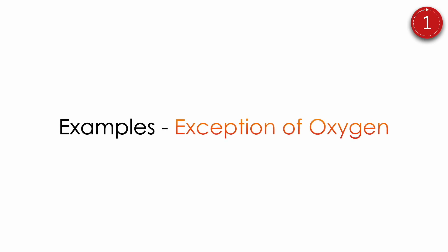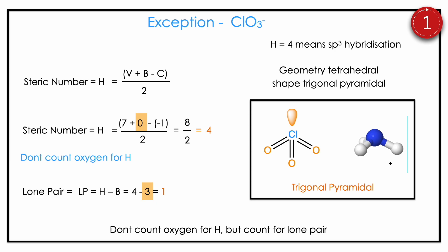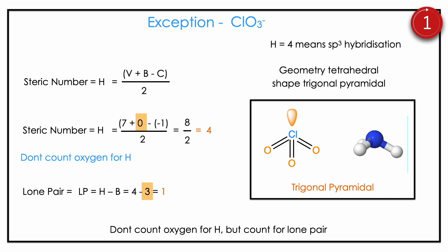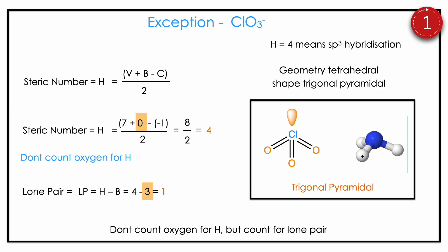Then exceptions — mainly concerning oxygen. When oxygen is present, our rules can be a little ineffective. The rule is: if oxygen comes, don't count it as a bonded atom for the steric number calculation, but do count it for the lone pair calculation. Example: ClO3−. Chlorine valence is 7, charge is −1, oxygen is not counted (B = 0 for steric number). H = (7 + 0 − (−1)) / 2 = 8 / 2 = 4. Lone pair = 4 − 3 = 1 (here we count all 3 oxygens for lone pair). H = 4 means sp3 hybridization and tetrahedral geometry, but shape is trigonal pyramidal because the lone pair is not visible.